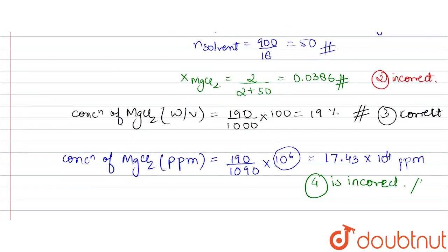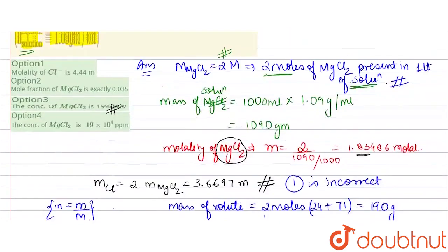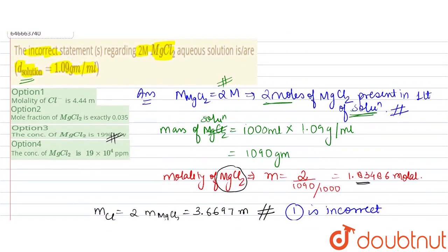In conclusion, only Option 3 is correct. Options 1, 2, and 4 are all incorrect statements regarding the two molar MgCl₂ aqueous solution. Thank you.